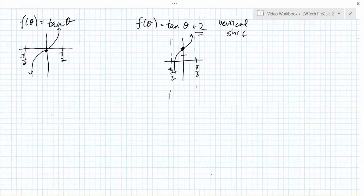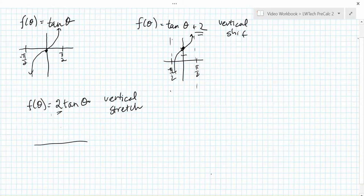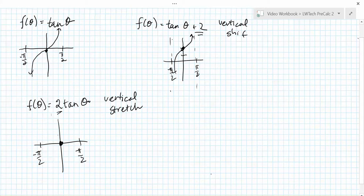Next, let's consider the function f(θ) = 2·tan(θ). Since the 2 is being multiplied outside of the tangent function, it will reflect a vertical stretch. We still have asymptotes at negative π/2 and π/2, and the graph still passes through the origin in the middle. However, it needs to increase twice as fast.